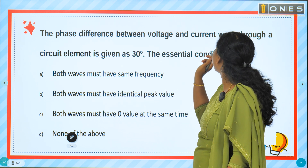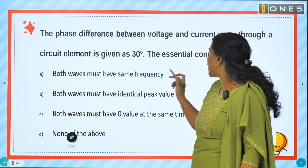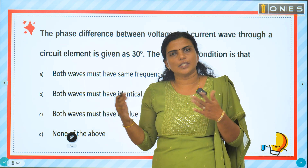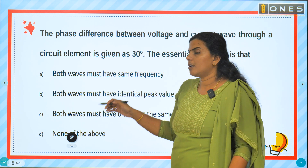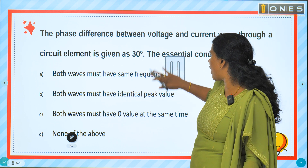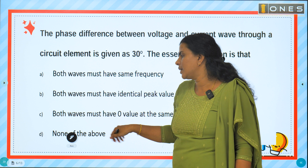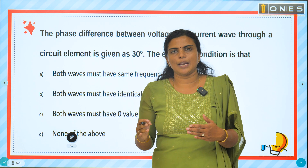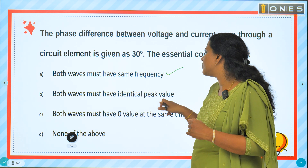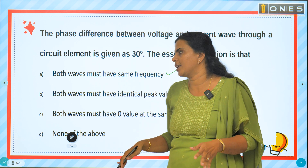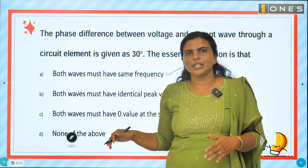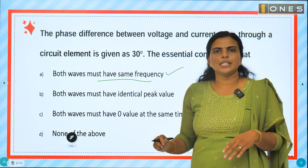The phase difference between voltage and current wave through a circuit element is given as 30 degrees. The essential condition is which of the following is true: both waves must have same frequency; both waves must have identical peak value; both waves must have zero value at the same time; or none of the above? The right answer is that both waves must have the same frequency — that is the only necessary condition.